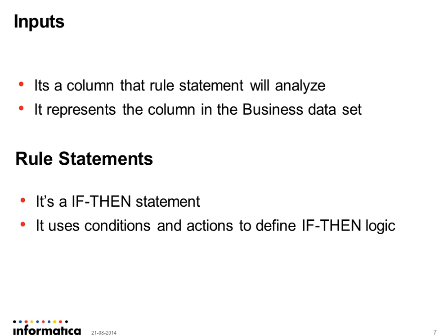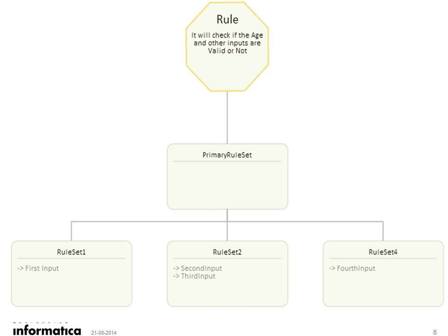A rule statement uses conditions and actions to define if-then logic. Here is the component diagram of the rule specification — shown in a hexagon. A rule specification has one and only one primary rule set, to which we can add any number of rule sets. As shown in the diagram, the primary rule set has rule set 1, rule set 2, and rule set 3 as child rule sets. The primary rule set can also act on the results from these child rule sets.